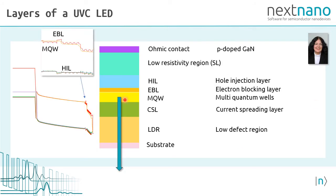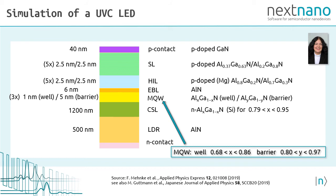Now, we discuss the layers of our far UVC LED device. It is a bottom emitter. It consists of a substrate, a low defect region, a current spreading layer, a multi-quantum well region, an electron blocking layer, a hole injection layer, a low resistivity region consisting of a super lattice, and a P-doped ohmic contact. In our simulation, we are using the widths and the alloy compositions of a recent publication by Frank Mehnke.